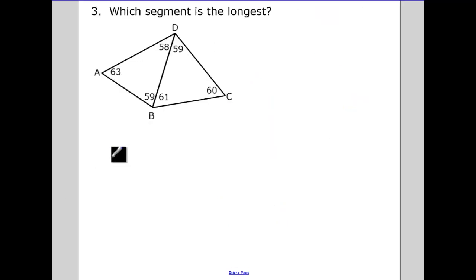Okay, sorry about that. Which segment is the longest? Okay, so let's start comparing our two triangles. Let's look at triangle A, D, B. And let's list out our smallest to the largest. So look for the smallest angle. The smallest angle is A, D, B. So the smallest side is opposite of that. So that's A, B.